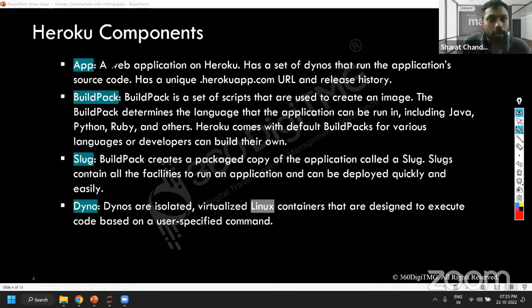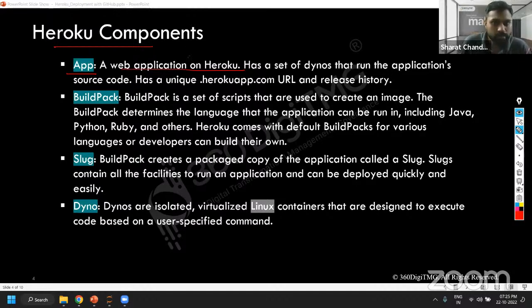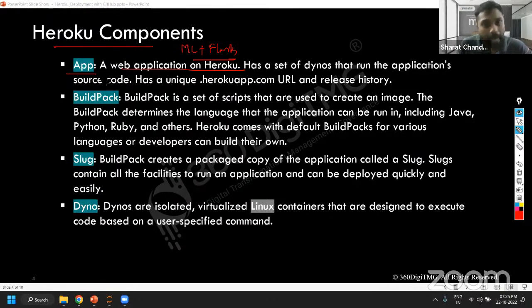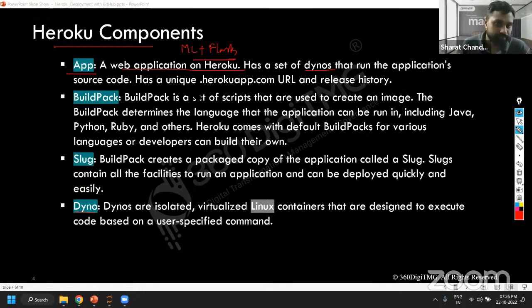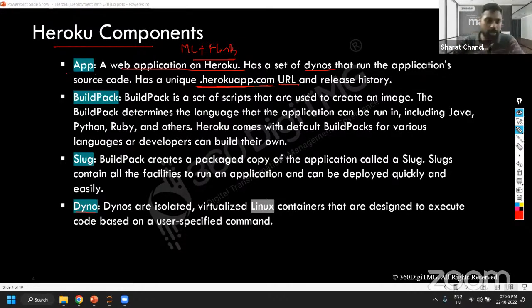If you talk about Heroku components as a platform, it has multiple things. These are the different components it contains. App — this is the web application on Heroku. This is nothing but your ML model plus Flask. Any application that you develop becomes your application, and it basically has a set of dynos. Dynos run the applications from the source code that you're going to share, and it contains a specific application URL — it gives you a separate URL which is like an endpoint to which you can communicate with the deployed application.